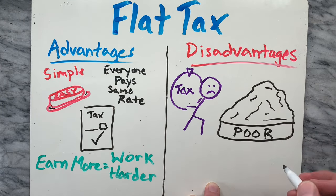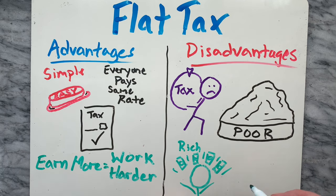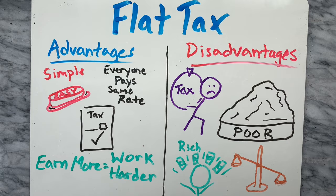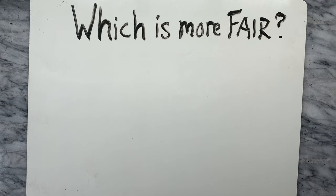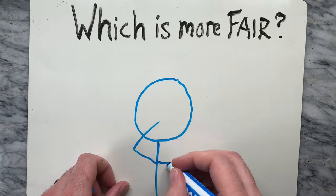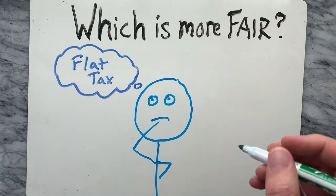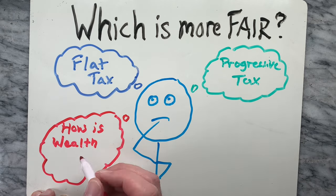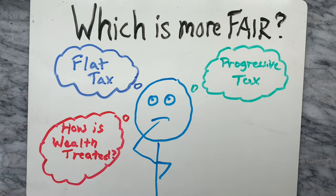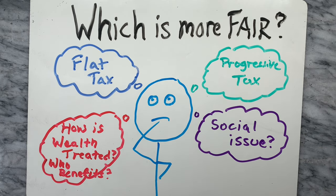Critics of a flat tax point out that it places an excessive burden on low-income earners, while high-income earners are left with a significantly disproportionate amount of money compared to low-income earners. In the end, both systems may be considered fair in the sense that they are consistent and apply a rational approach to taxation. What differs is how wealth is treated and who is seen as receiving the greater benefit. Some believe it is more of a social or political question than a financial question.